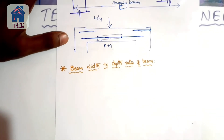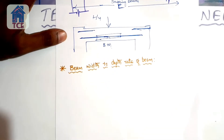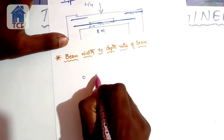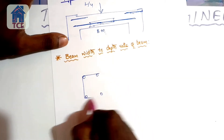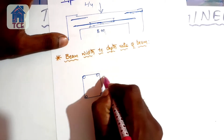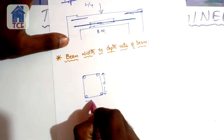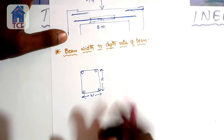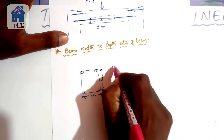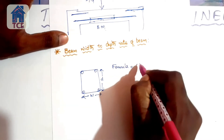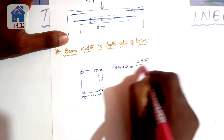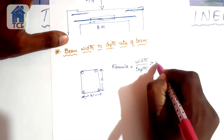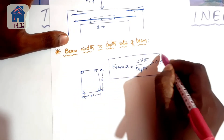The next topic is the beam width-to-depth ratio. Looking at the cross-section of the beam, we can see the depth and width. The formula is width divided by depth. This is the main formula used for beam design.